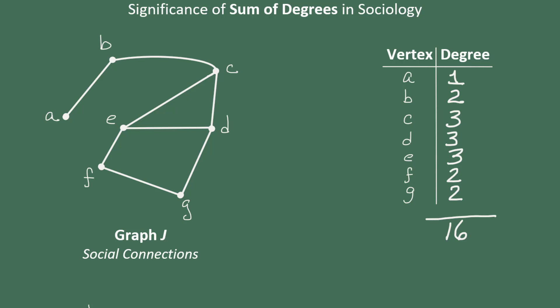In the context of social connections, this is really the number of friends or acquaintances or colleagues that a person has. So A has one friend, person B has two, person C has three, and so on.